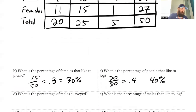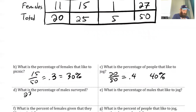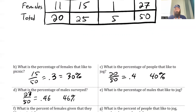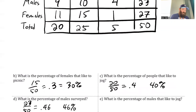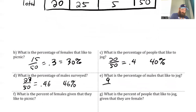What is the percentage of people that like to jog? Total people will be 20 out of the 50, which equals 0.4, which is 40%. What is the percentage of males surveyed? Males is 23 out of the 50 surveys, so that is going to be 0.46, which is the same as 46%. And what is the percentage of males that like to jog? Males that like to jog was 9 out of 50, which is going to be 0.18, which is the same as 18%.